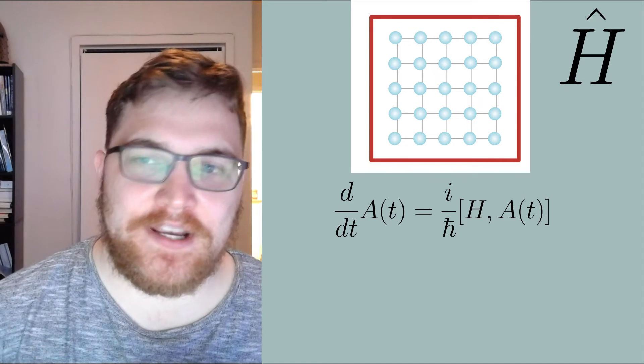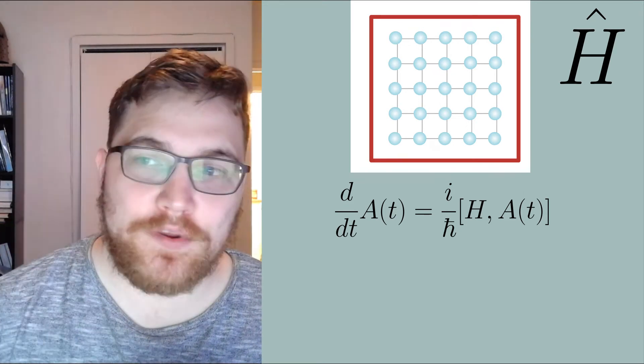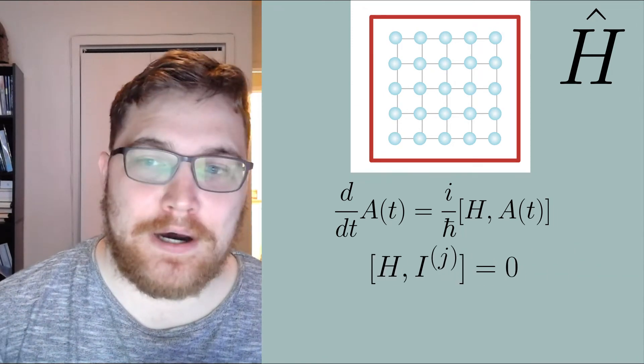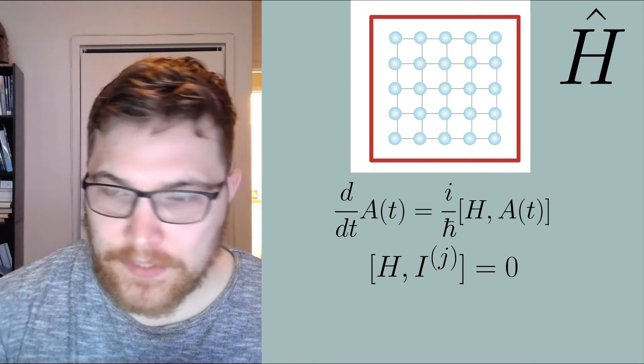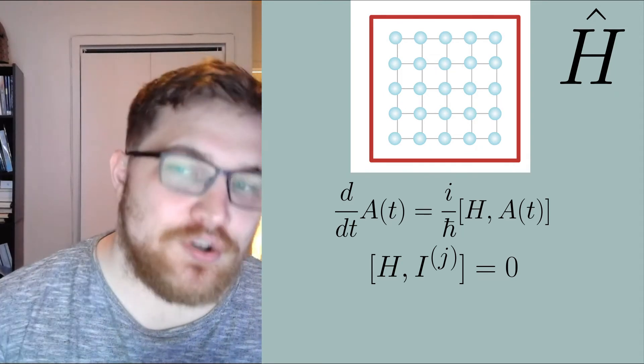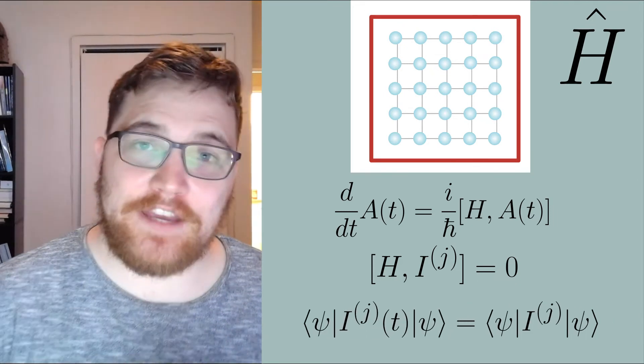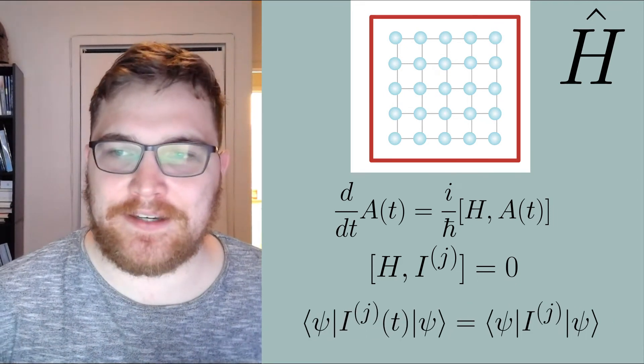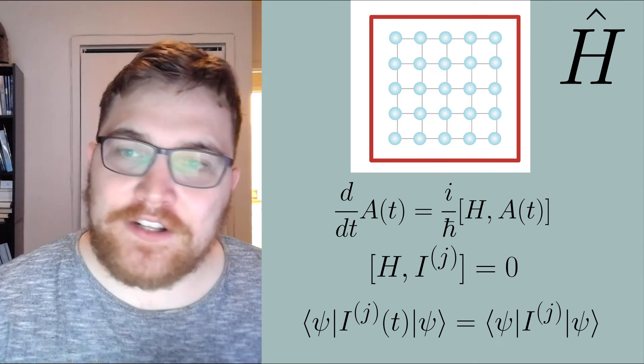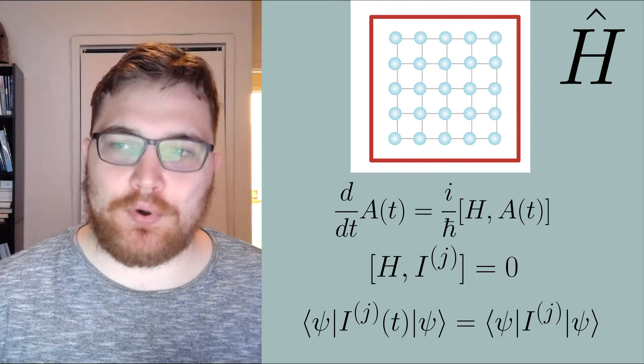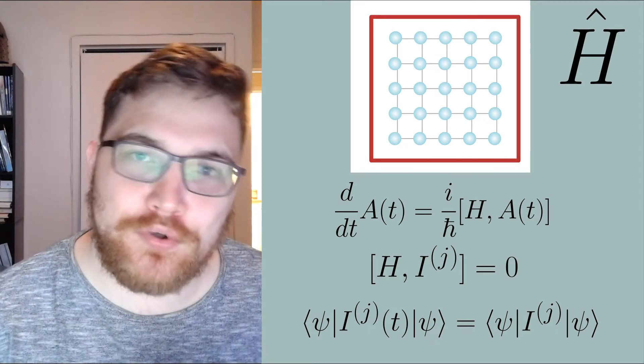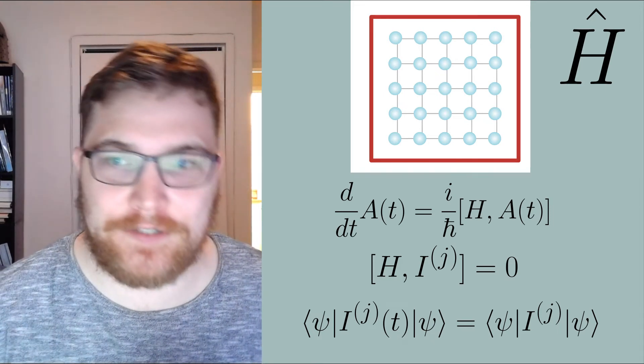Now suppose we have a set of observables I with superscript j with the property that they commute with the Hamiltonian. This means that they are integrals of motion, or namely, assuming that we start in some pure state psi, the integrals of motion have expectation values that are time independent. If we wait long enough, we might expect that the system will equilibrate to something that looks like statistical mechanics. If that's true, we would need our ensemble to obey the expectation values given by our initial conditions for the integrals of motion since they are unchanging.